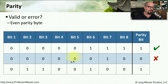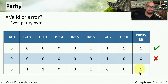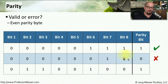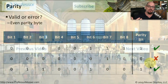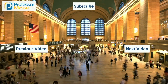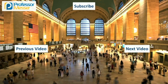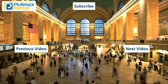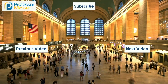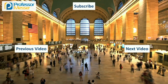Looking at the last byte: 0, 1, 1, 0, 0, 1, 0, 0 with a parity bit of 1. Counting the ones gives 1, 2, 3, 4 — an even number, which means that byte is a correct value.